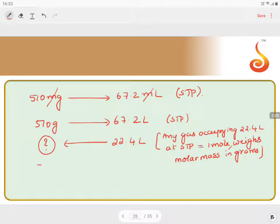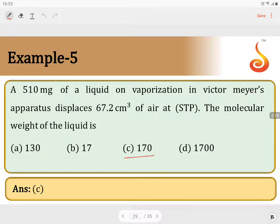So at 22.4, how much is the mass? That is 510 into 22.4 by 67.2, which is three times, which equals to 170 grams. So the answer for this particular one is 170 grams. That is the molecular weight of the substance, option C.